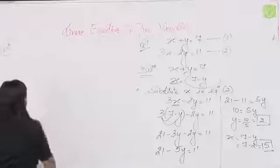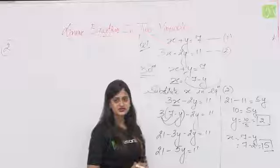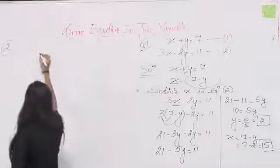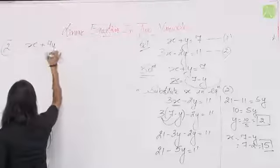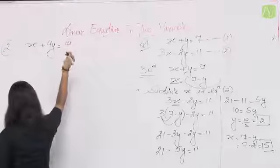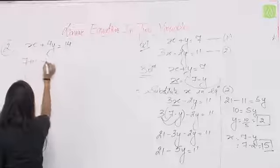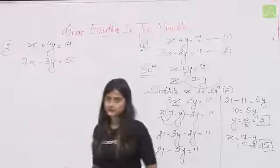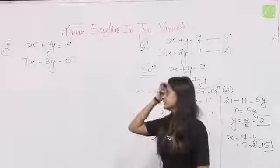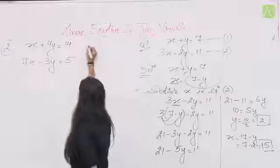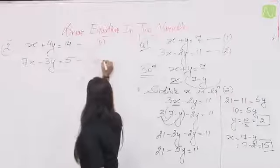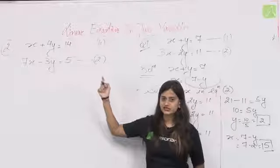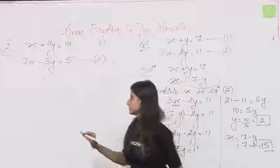Second question: x + 4y = 14 and 7x − 3y = 5। यह equation number 1 और equation number 2 है। Same process: first equation से value निकालकर second equation में put करनी है।